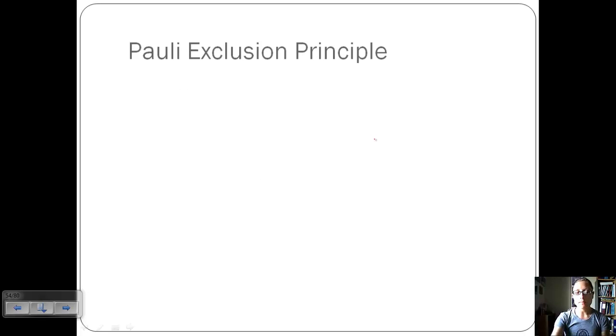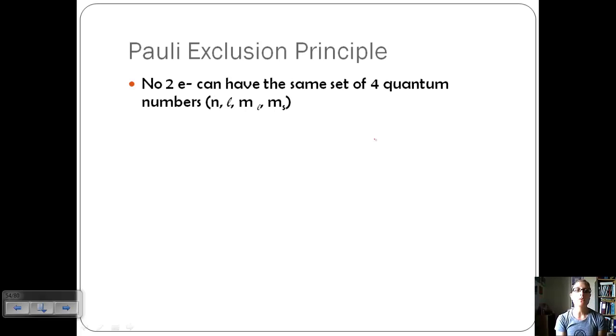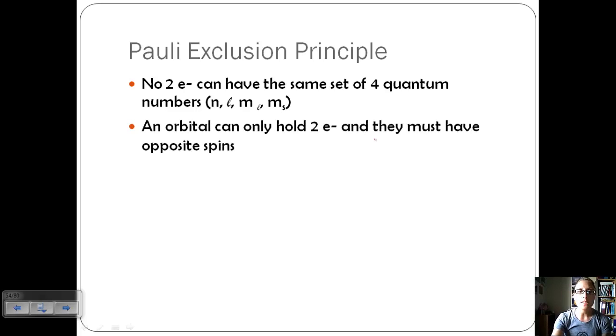Let's relate all of our quantum numbers to some principles. We have the Pauli exclusion principle. This says that no two electrons can have the same set of four quantum numbers. Each electron is going to basically have its own kind of map or address, and that's what these quantum numbers indicate.